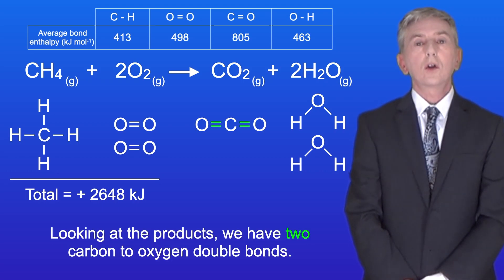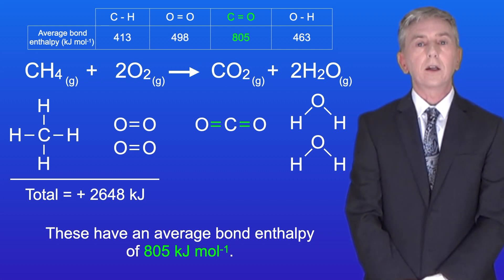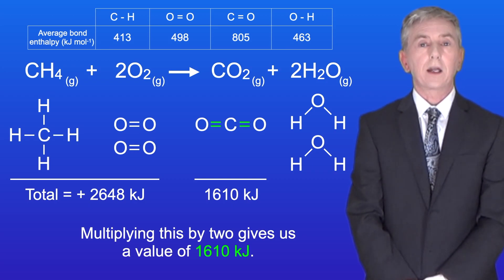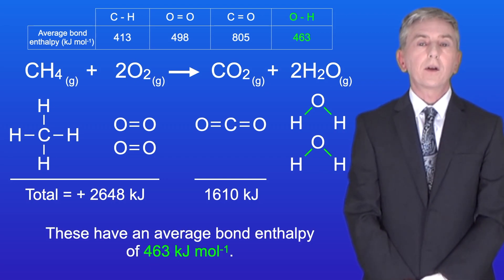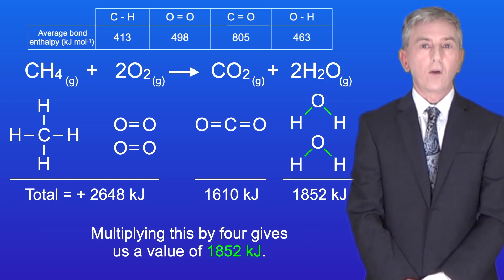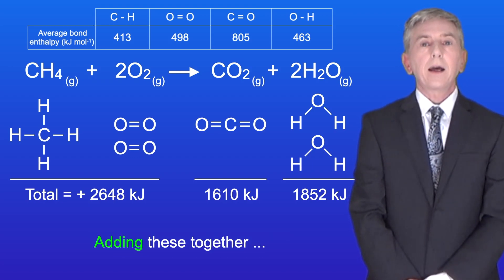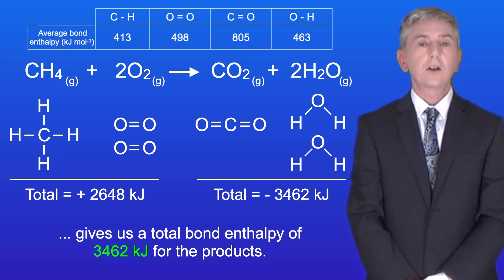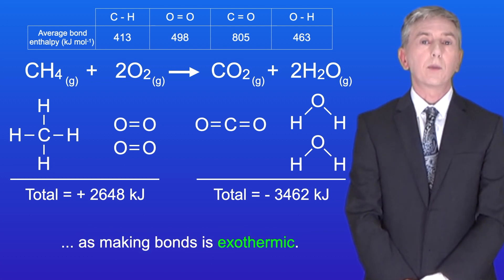Looking at the products, we've got two carbon to oxygen double bonds, and these have an average bond enthalpy of 805 kilojoules per mole. Multiplying this by two gives us a value of 1610 kilojoules. We've got four oxygen to hydrogen bonds. These have an average bond enthalpy of 463 kilojoules per mole. Multiplying this by four gives us a value of 1852 kilojoules. Adding these together gives us a total bond enthalpy of 3462 kilojoules for the products, and remember that this is a negative number as making bonds is exothermic.